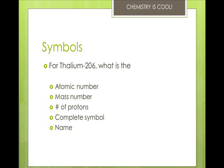So we take that 206, subtract the 81 for the atomic number, and we would get 125 for the number of neutrons, which isn't asked. The number of protons is 81, same as the atomic number, as always. The complete symbol is 206 over 81, and then TL for the symbol, and the name is thallium.